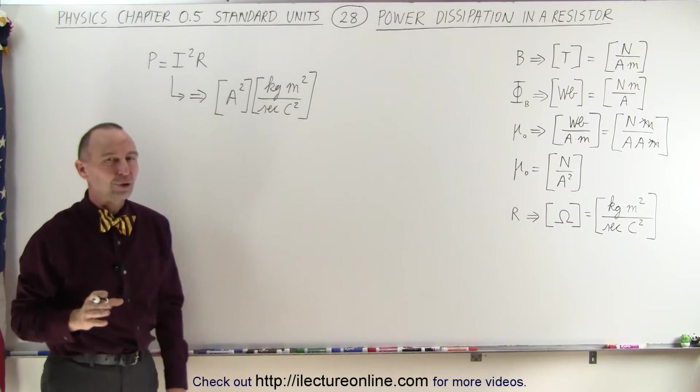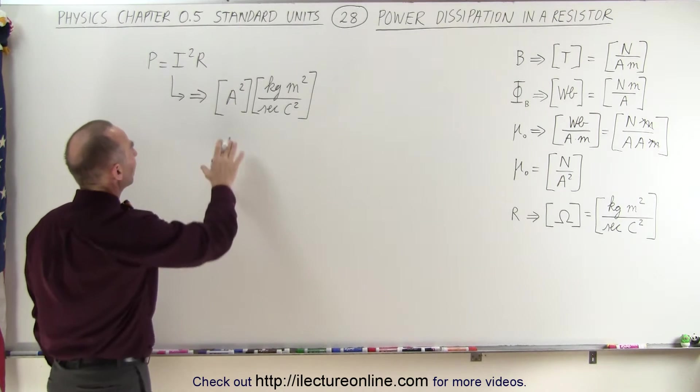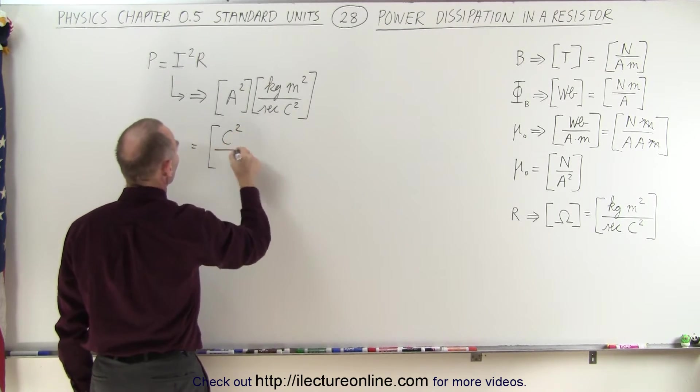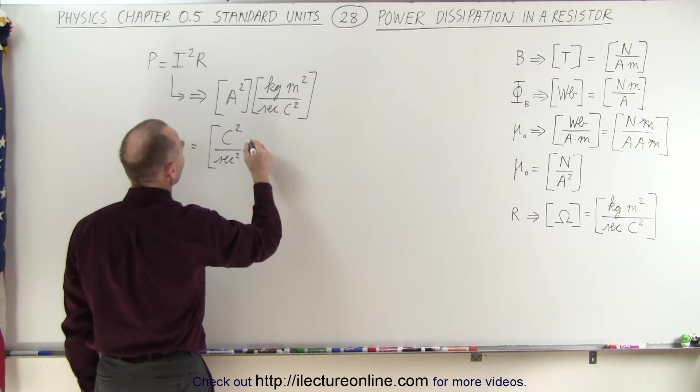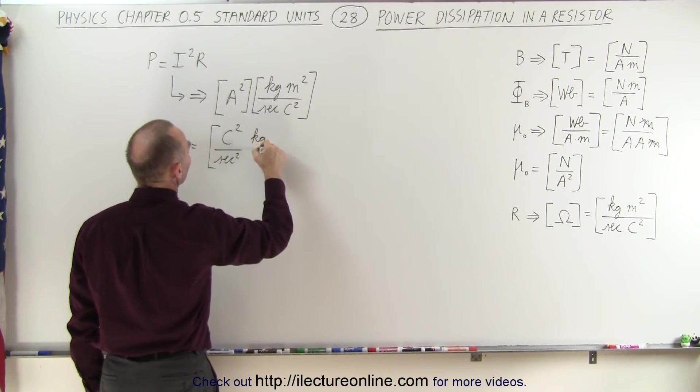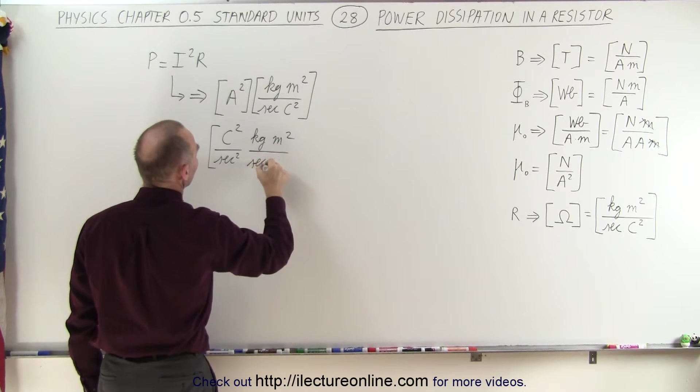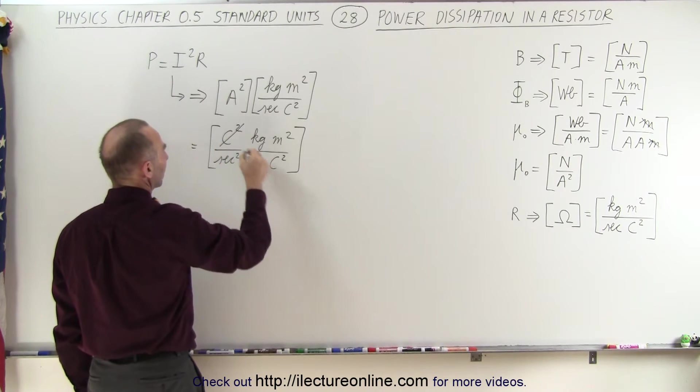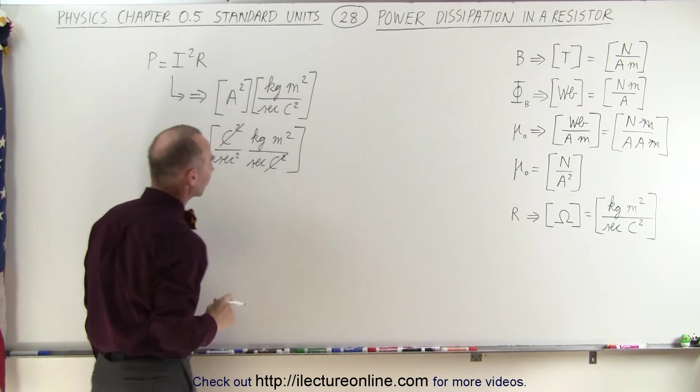Now an amp is a coulomb per second, so we can replace that with the following. That would be coulomb squared per second squared times kilogram meters squared per second times coulomb squared. And notice we have a coulomb squared here and a coulomb squared, so the coulombs are gone.